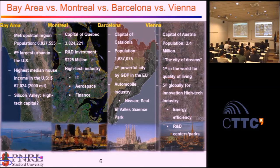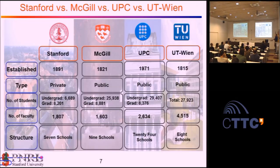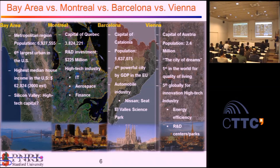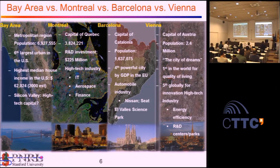Looking deeper into regional differences, the San Francisco Bay Area is a bit similar to other large metro areas like Montreal, Barcelona, or Vienna. The population in the Bay Area as a whole is close to 7 million people, much larger than the others. But the city of San Francisco is actually very compact — only 700,000 people, so most people live in the metro area. It has the advantage or disadvantage of the highest median income, but real estate prices are also the highest in the country, so it all gets normalized at the end of the day.